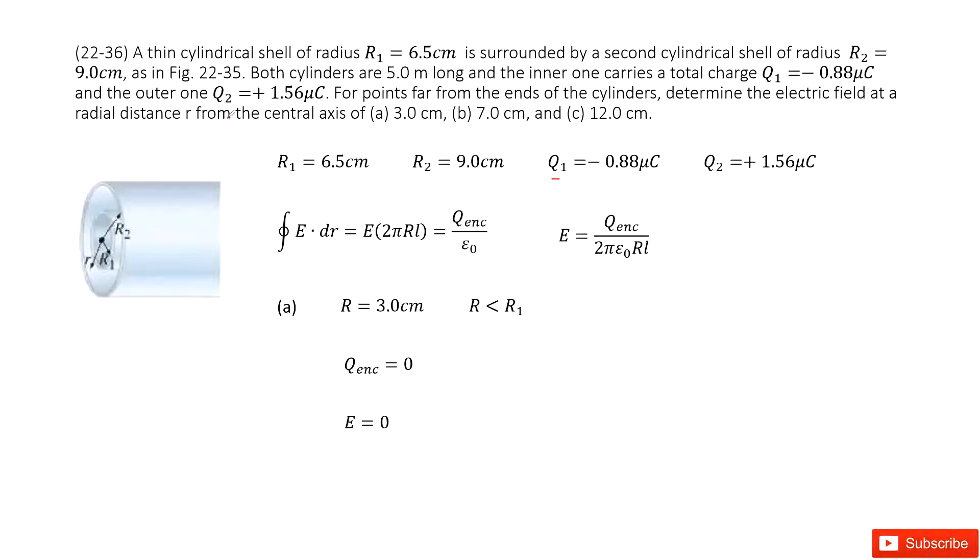First location is r = 3 centimeters. This r is smaller than R1, so we can draw a Gaussian surface smaller than R1. The electric field times the Gaussian surface equals the enclosed charge divided by epsilon naught. We can write the electric field function as Q_enc/(2πε₀RL). We look at this Gaussian surface. Is there any charge enclosed? No. The enclosed charge is zero, so E equals zero.